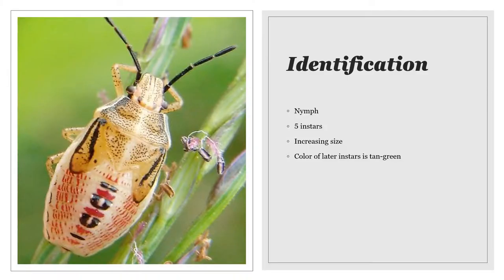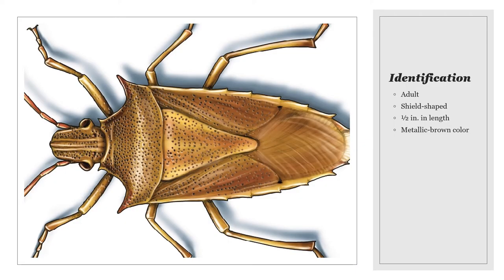The rice stink bug nymph goes through five instars of increasing size, and the color of the later instars is tan-green. The adult has a shield-shaped body that's typically about a half inch in length and a metallic brown color.